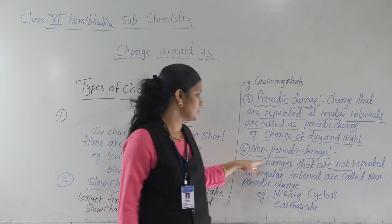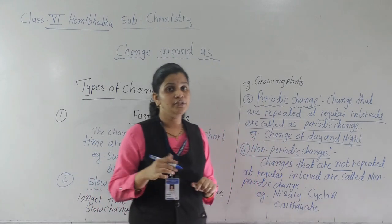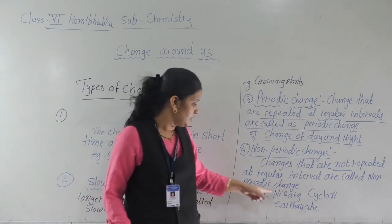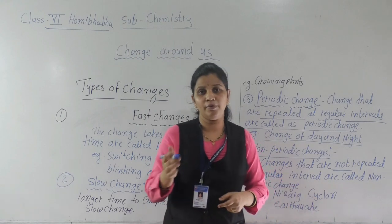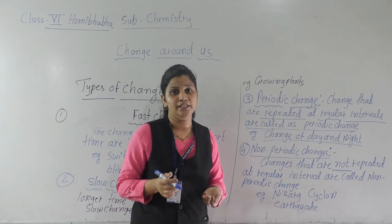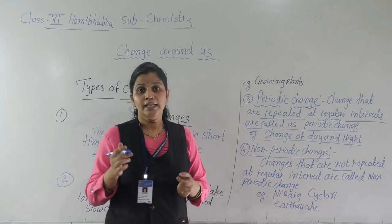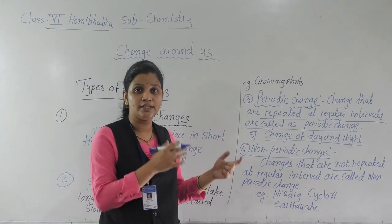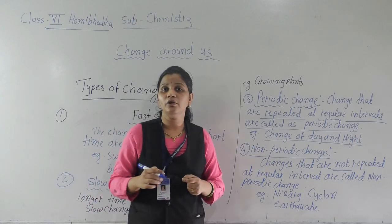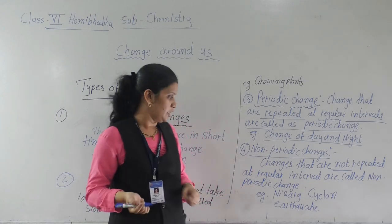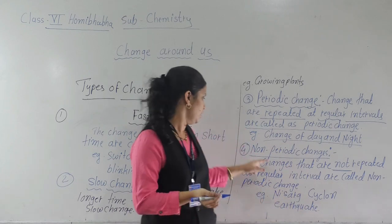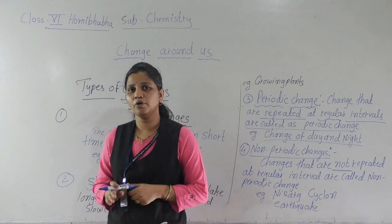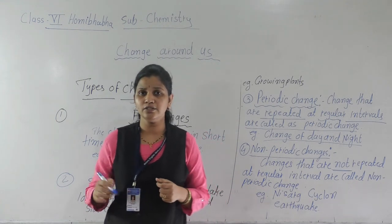Such changes are known as non-periodic changes. For example, the cyclone that occurred 23 days ago — you know about that. Because of that, many restrictions occurred. This is a non-periodic change. We were not knowing when these changes would occur, and it does not repeat again and again. We are not knowing when it will happen. So these kinds of changes are known as non-periodic changes.